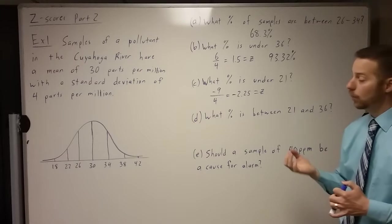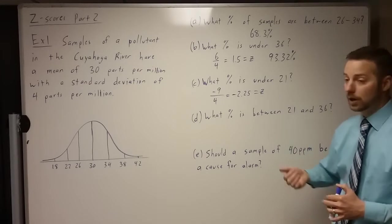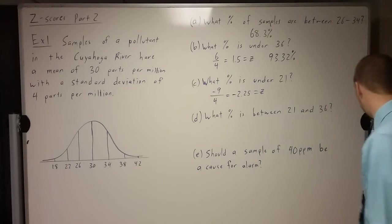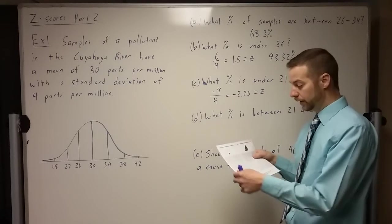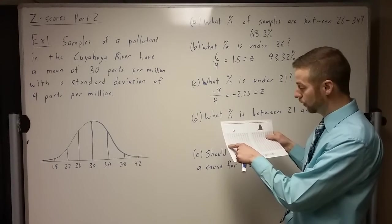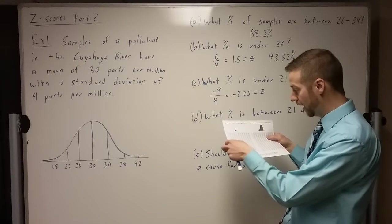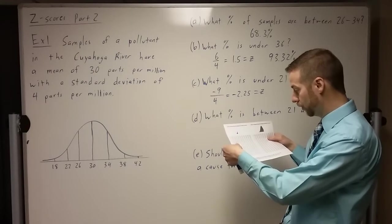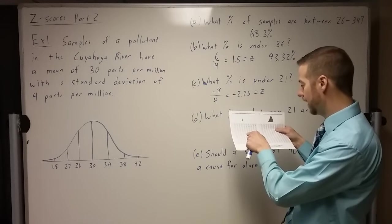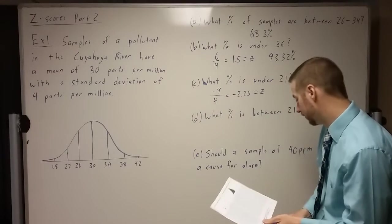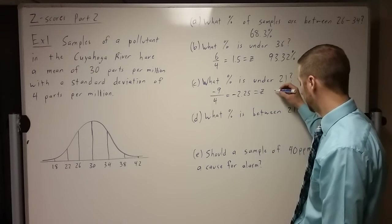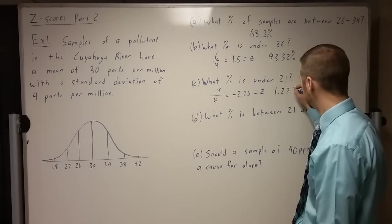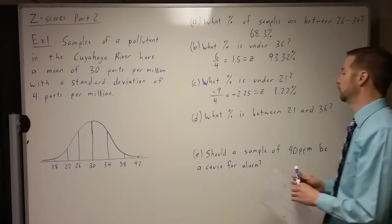We want to know what percent of the data should fall below 2.25 z-scores below the mean. Looking on our z-table here, if I go negative 2.25, so negative 2.2, and then I got to go over to 5, I come up with 0.0122 or, changing it to a percentage, 1.22 percent.